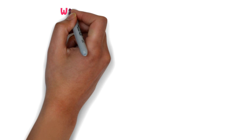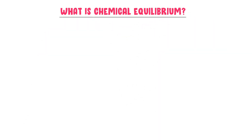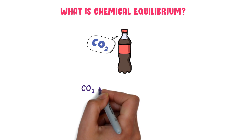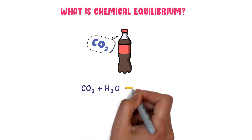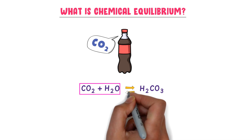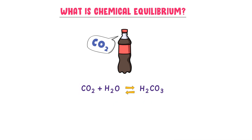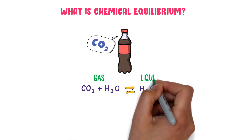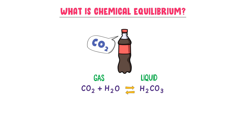Now let me teach you what is chemical equilibrium. Consider a bottle of carbonated drinks. In the bottle, the carbon dioxide gas is present in the space between the liquid and the cap. Now carbon dioxide gas will dissolve in water to form carbonic acid, H₂CO₃. Secondly, carbonic acid will break down to form water and carbon dioxide gas. Hence, carbon dioxide moves from gaseous phase to liquid phase and then from liquid phase to gaseous phase.